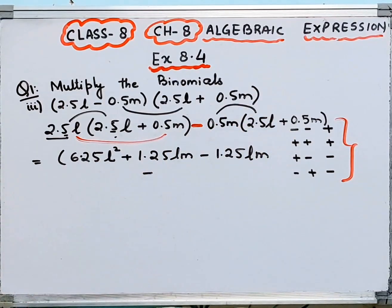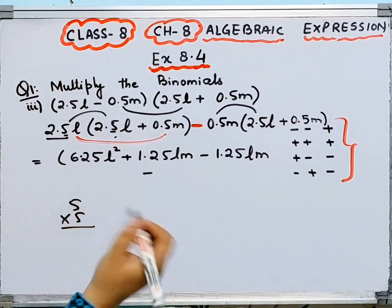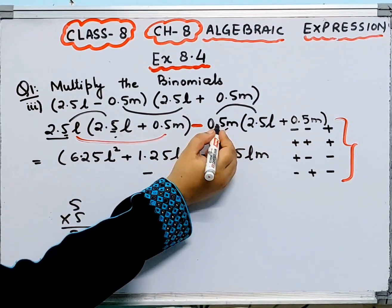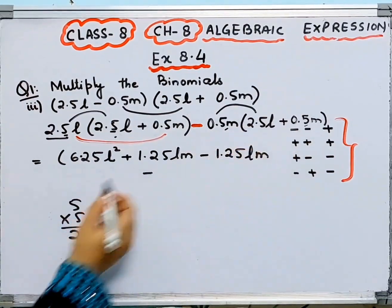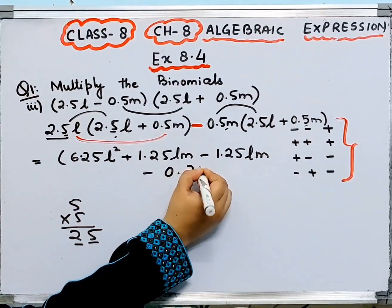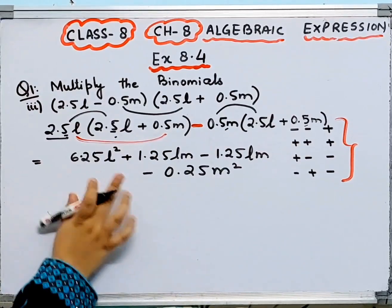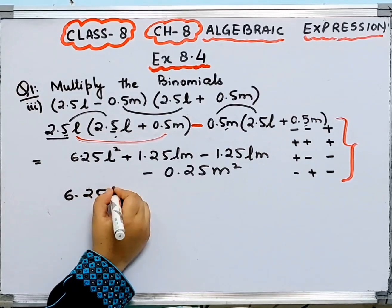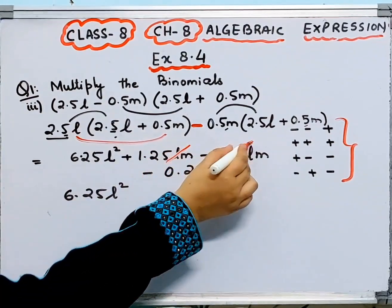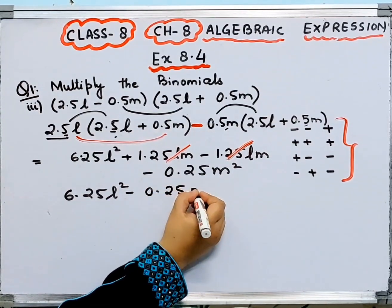Next, minus 0.5M multiplied: minus times minus is plus. 0.5 times 0.5 — counting 2 decimal digits total — gives 0.25M squared. Now the two middle terms cancel out, and we are left with 6.25L squared minus 0.25M squared. That is your answer.